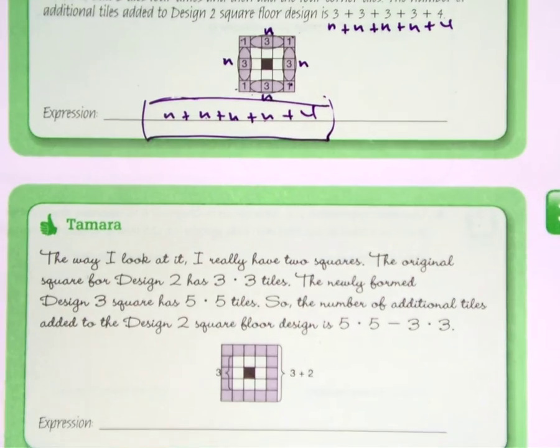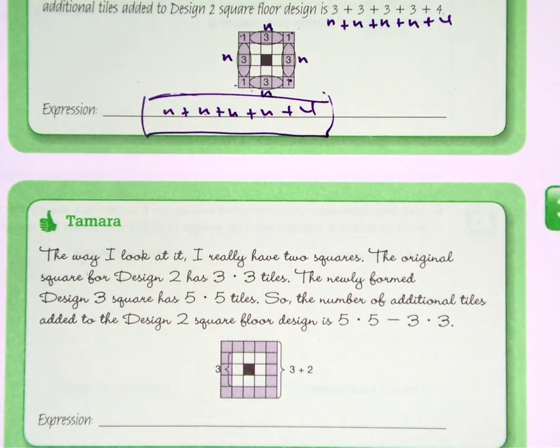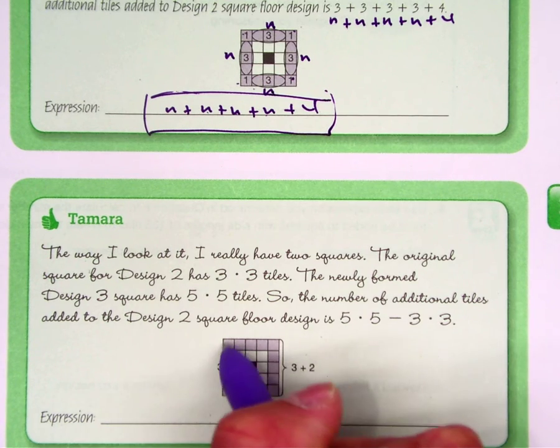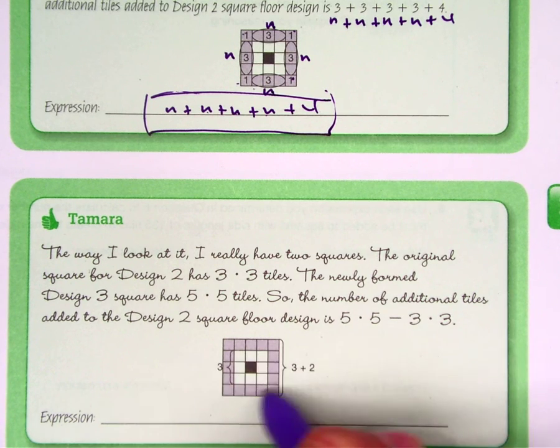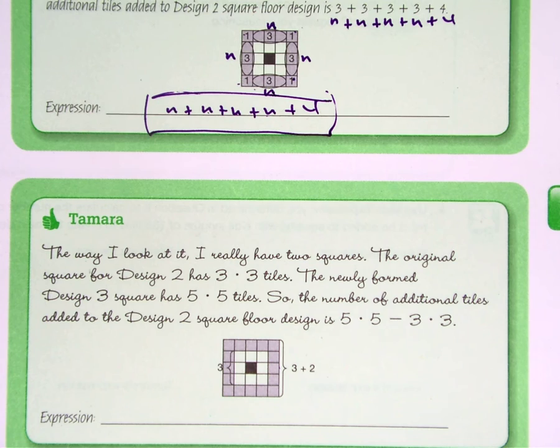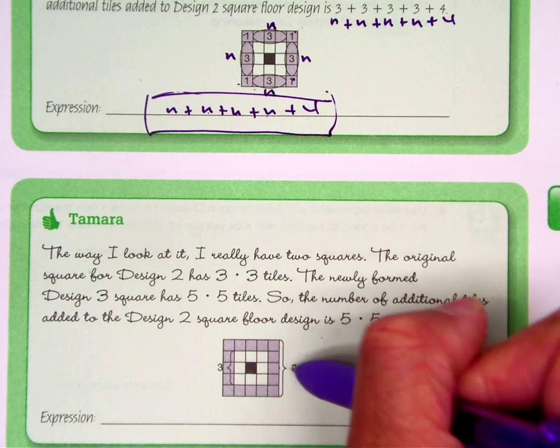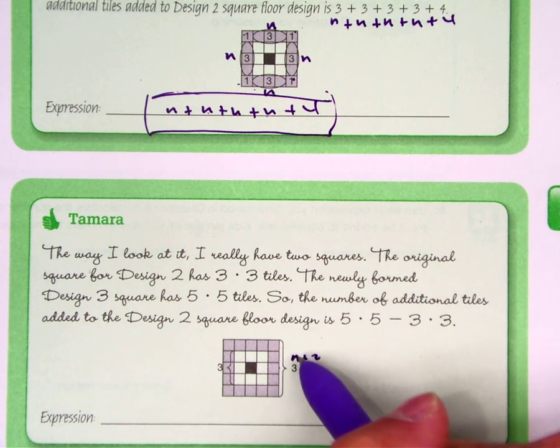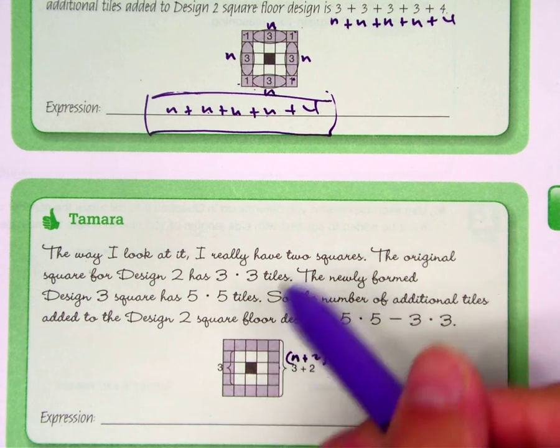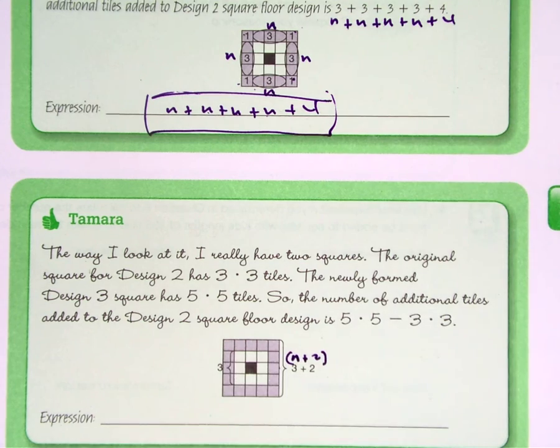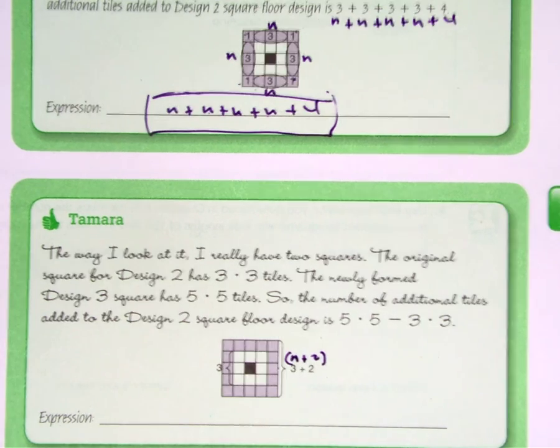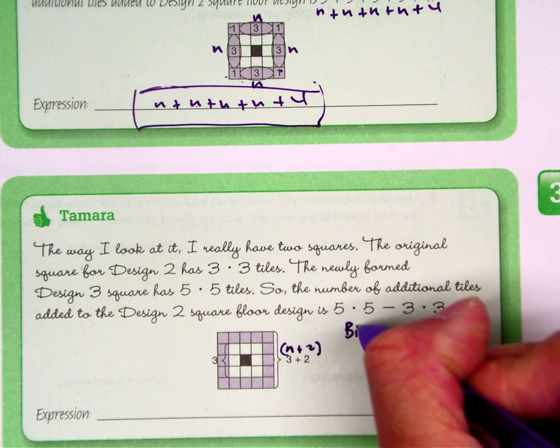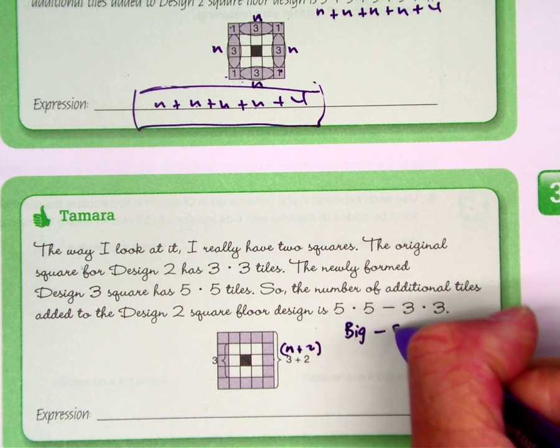Let's go over to Tamara. This one is probably the more difficult one. Again we're trying to figure out an expression equation that finds us the shaded region. Well Tamara wrote 3 plus 2, so that's really n plus 2. And then in the inside she wrote n. So in this equation I want you to think of it as kind of like the big square minus the small square.